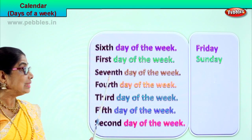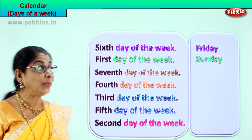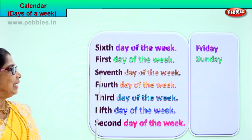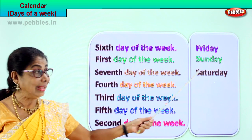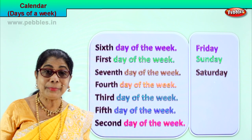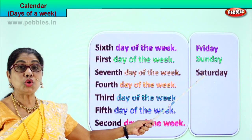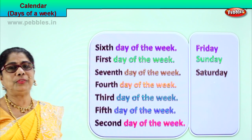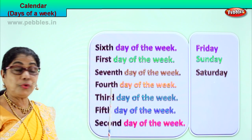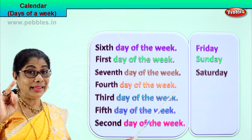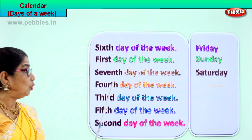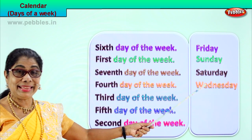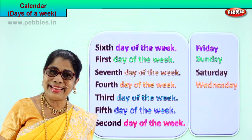Read the next one — seventh day of the week. Which is the seventh day? Sixth is Friday, seventh is Saturday. Seventh day of the week is Saturday; begin with the capital letter. Spell Saturday: S-A-T-U-R-D-A-Y. It is the seventh or the last day of the week. Fourth day of the week: Sunday, Monday, Tuesday, Wednesday — fourth day of the week is Wednesday. Spell Wednesday: W-E-D-N-E-S-D-A-Y.